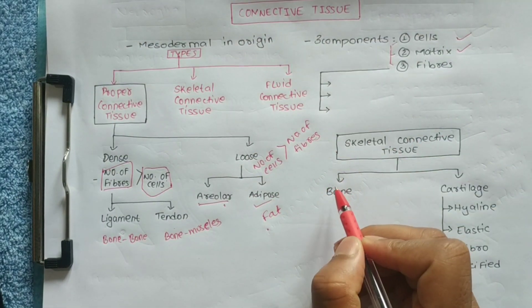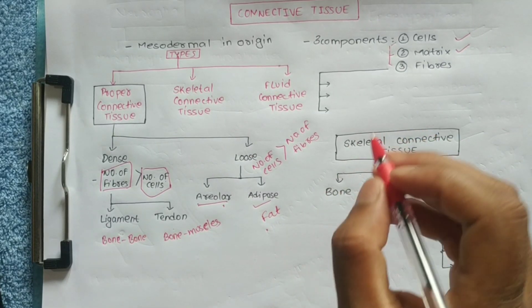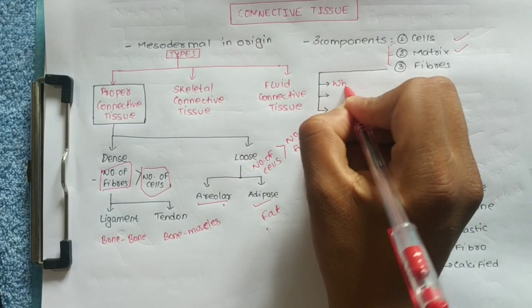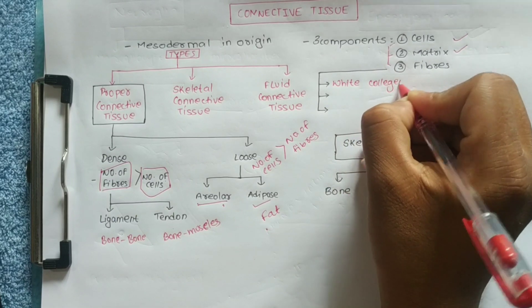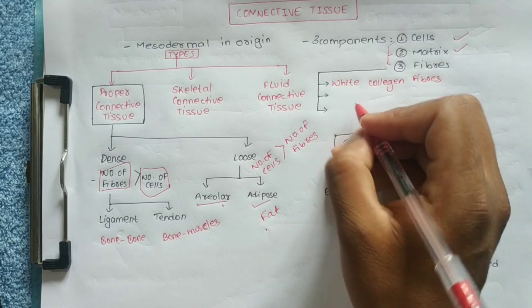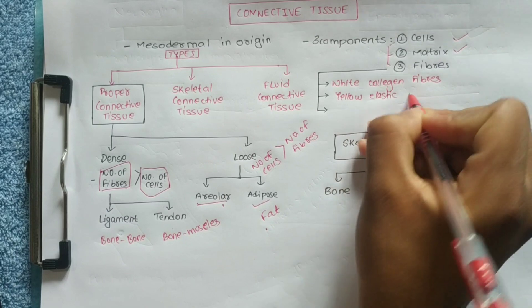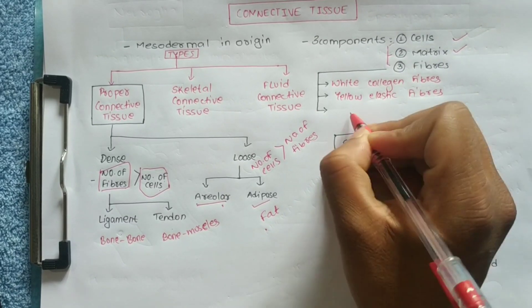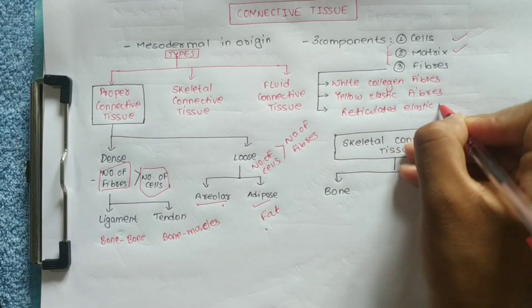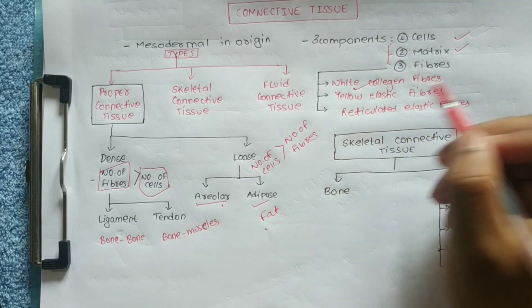We have three types of fibers. The first is white collagen fiber, the second is yellow elastic fiber, and the third is reticulated fiber. White collagen fiber is white in color, yellow elastic fiber is yellow in color, and reticulated fiber forms a network.